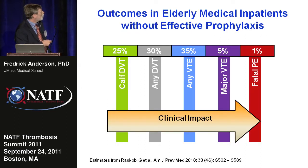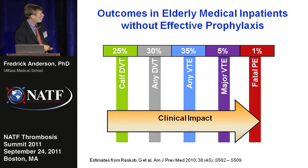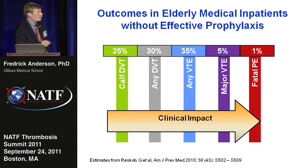If we look at estimates based upon elderly medical patients who do not receive effective prophylaxis in the hospital, we can look at a spectrum of clinical impact from relatively low to fatal. About 25% of patients with severe medical illnesses who are hospitalized will develop a calf DVT if they don't receive prophylaxis. About 30% will develop any type of DVT. About 35% will develop any type of VTE, including pulmonary embolism. About 5% will develop major venous thromboembolism — clots above the knee — and about 1% will have a fatal pulmonary embolism.